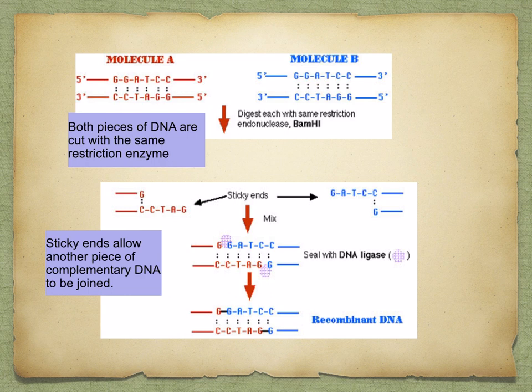If you use the same restriction endonucleases to cut DNA from different organisms, then all the fragments produced will have ends that are complementary to one another. This means that the single-stranded end of any one fragment can be joined to the single-stranded end of another — in other words, their ends are sticky. If you use the same restriction endonucleases, such as BAMH1 in this diagram, to cut DNA from different organisms, you can combine the sticky ends together using ligase.